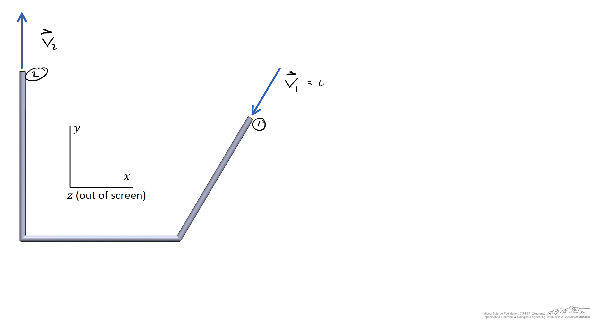For v1, we have u1 times i hat in the x direction, plus v1 times j hat in the y direction, plus w1 times k hat in the z direction. Because this is a two-dimensional flow, w1 equals zero, so there's no velocity component in the z direction entering at location 1.